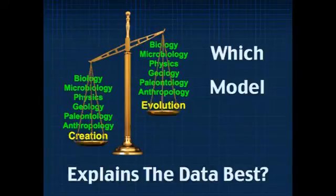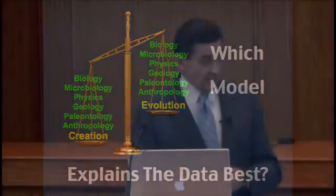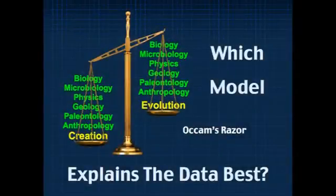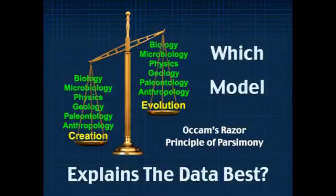The one that fits directly and simply with the fewest secondary assumptions is the best model. You can make any model fit with enough secondary, tertiary, or quaternary assumptions — the more assumptions you have to make, the poorer the model is. The model that fits directly and simply is the best scientific approach, and that is the way we will proceed. Let us think about which model — creation or evolution — is best served when we look at what Darwin actually saw.